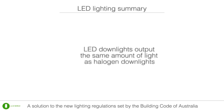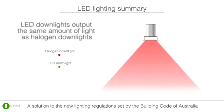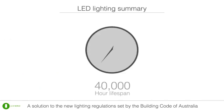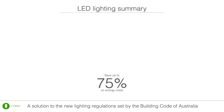LED downlights are superior to halogen downlights as they emit the equivalent amount of light, last for 40,000 hours, and can save users up to 75% on energy costs.